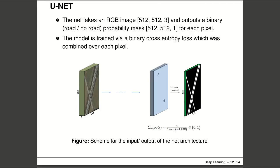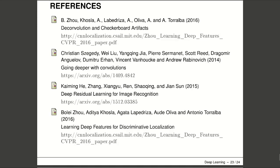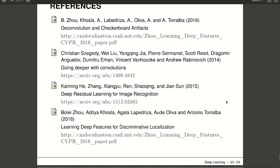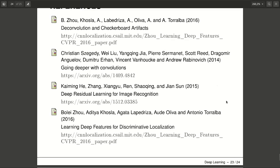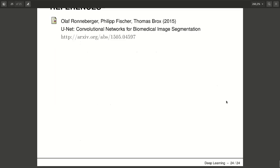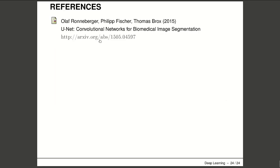The U-Net architecture can be trained using binary cross-entropy loss or categorical cross-entropy loss function. Here are the references used for this part of the lecture. Thank you for your attention.